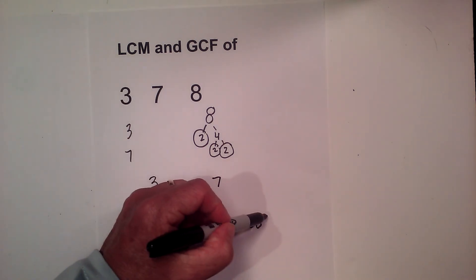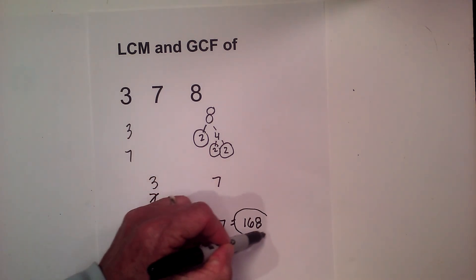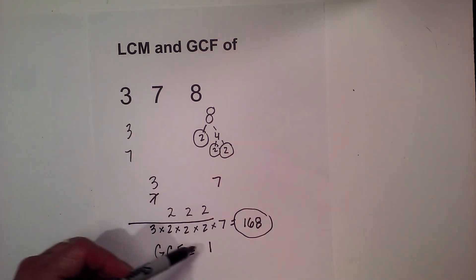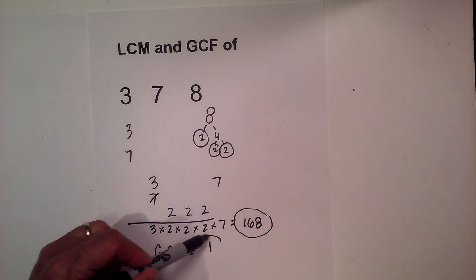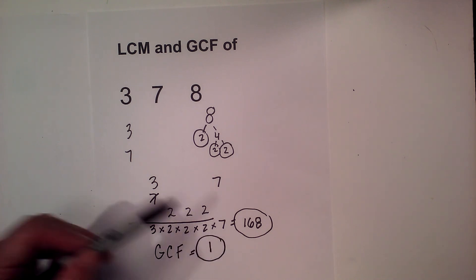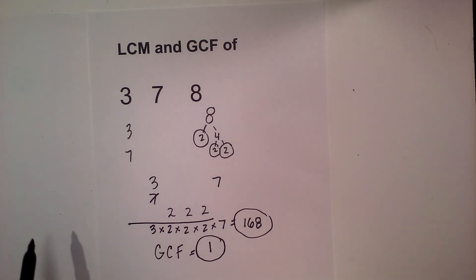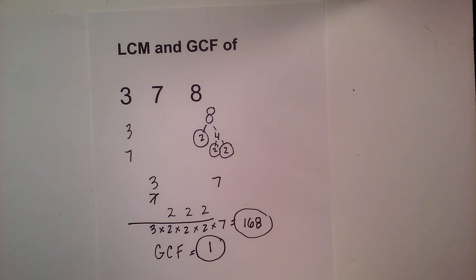So the lowest common multiple of three, seven, and eight is 168, and the GCF is one. I hope that helps — thanks for watching! Moomoo Math uploads a new math and science video every day, so please subscribe and share.